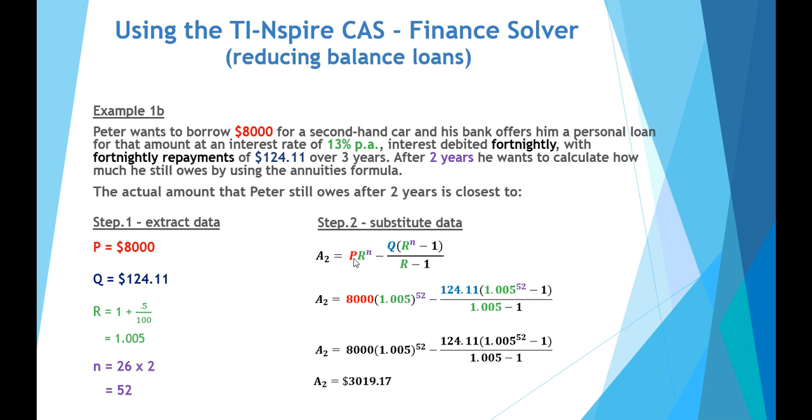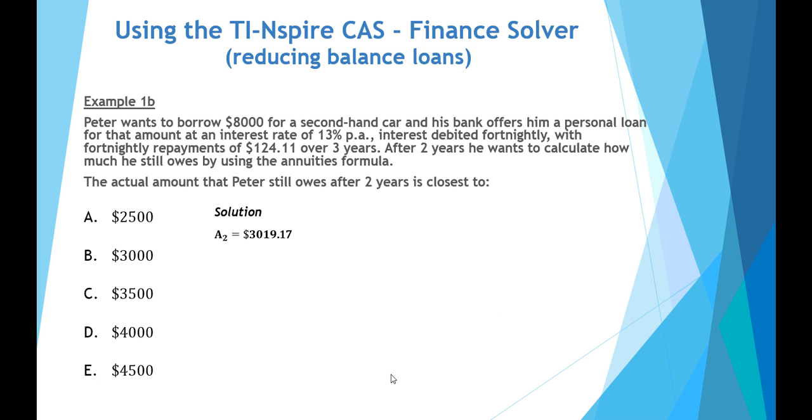So, here's the calculation using the annuities formula, exactly the same answer. And so, our nearest option, the closest to, will be option B of $3,000.